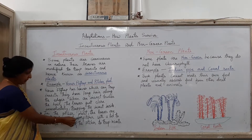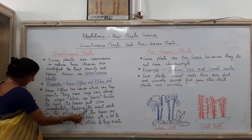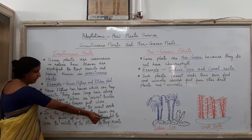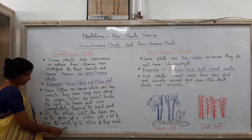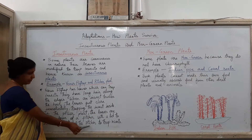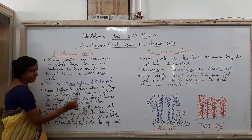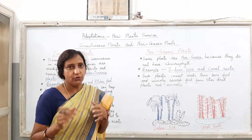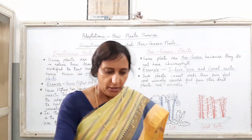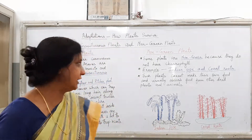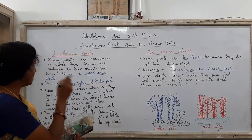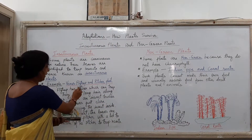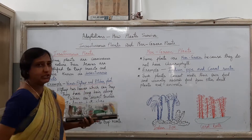In the pitcher plant, the leaves are in the form of a pitcher with a lid to cover the top of the pitcher, and that is how it traps the insect. I have got a model to show you about the kinds of insectivorous plants. The examples are Venus flytrap and pitcher plant.